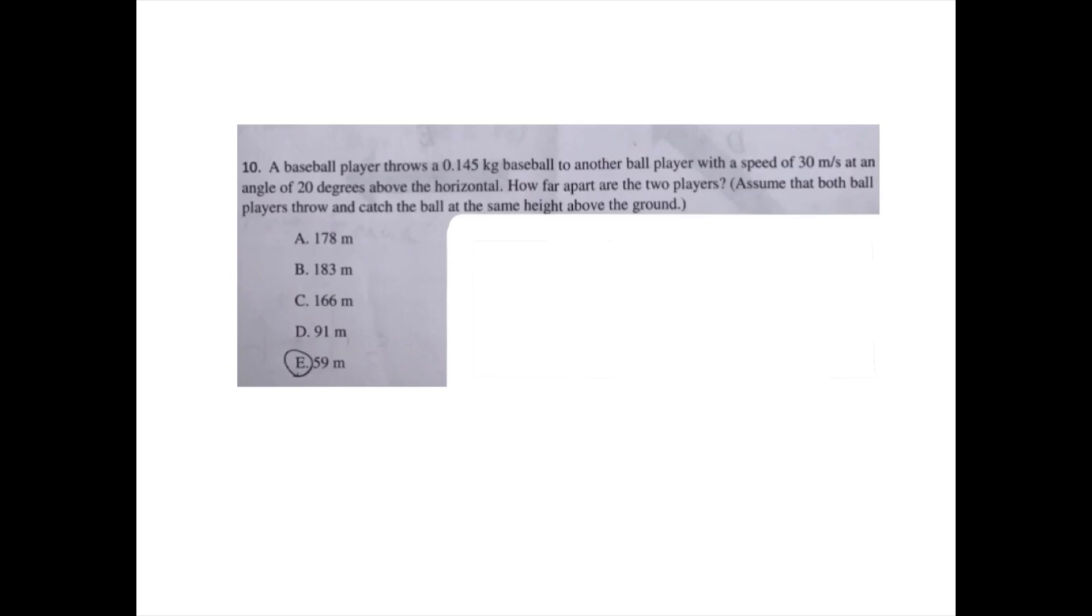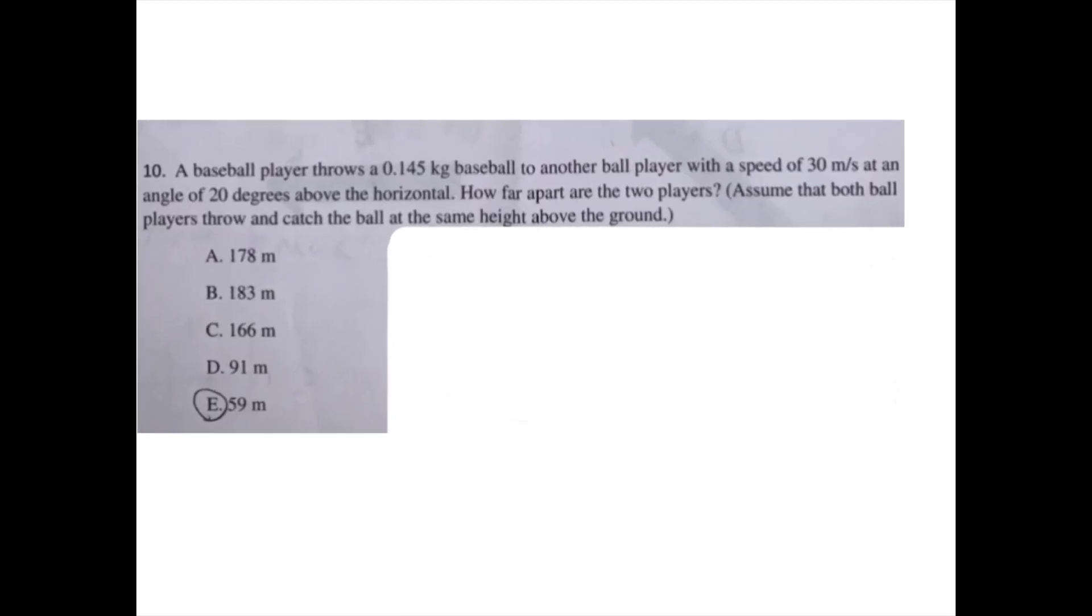Pause the video and read question 10. This is a classic kinematics problem, where they give you V initial equals 30 meters per second. The initial in the x direction using trig would therefore be 30 cosine, the angle that they give you, which is 20. And that equals 28.19 meters per second.